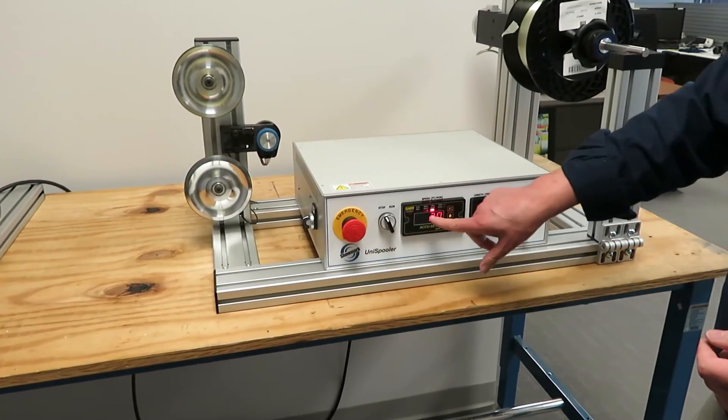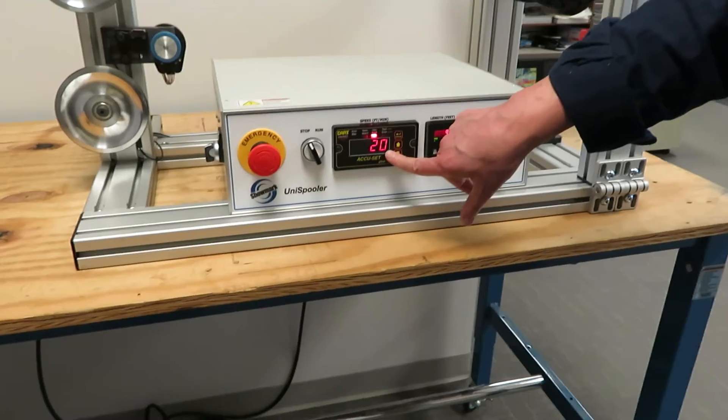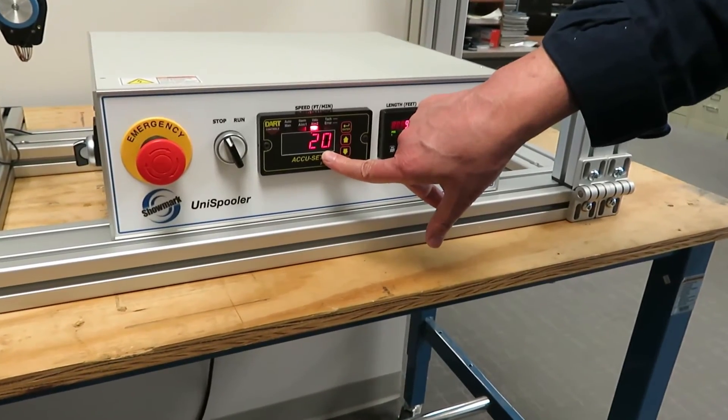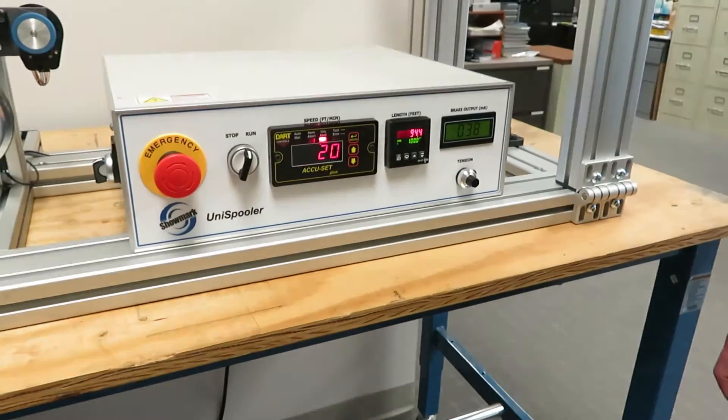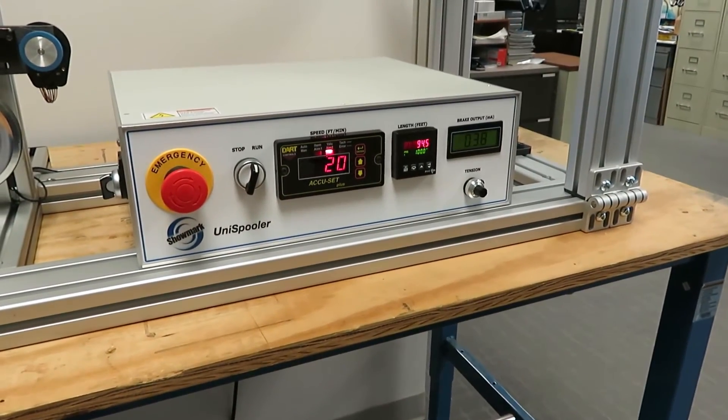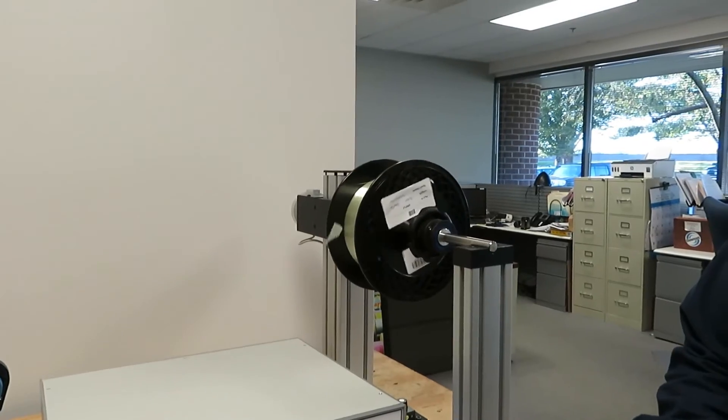And here we're able to set a desired linear speed that's right now set for 20 feet per minute. And if I turn it on, there'll be a slight delay, but it'll start running.